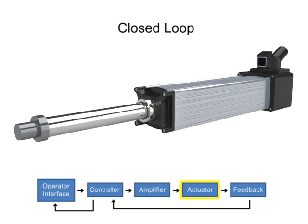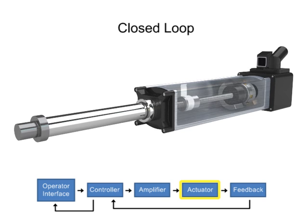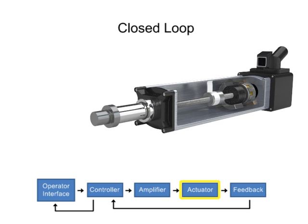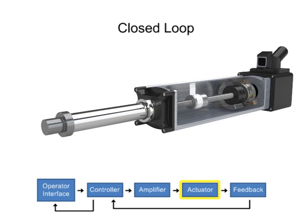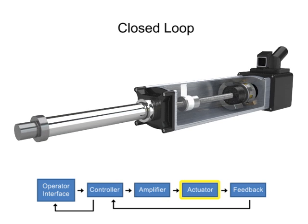The actuator is defined as a motor, cylinder, or other electromechanical device used to create motion. Linear actuators used in industrial applications convert rotary motion to linear motion by turning the actuator nut to move the screw in a straight line.